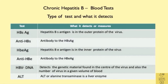This slide shows the common blood tests done in this condition. HBsAg is the hepatitis B surface antigen found in the outer protein coat of the virus. Anti-HBs is the antibody produced by the body against HBsAg. HBeAg is found in the inner layer of the virus. Anti-HBe is the antibody produced against HBeAg. HBV DNA is a blood test that detects the genetic material found in the center of the virus and also the number of viruses in a given volume of blood.